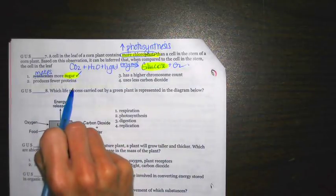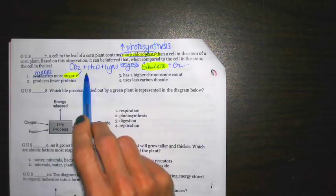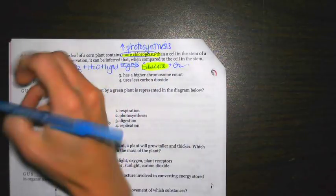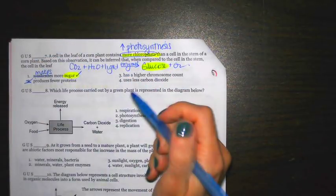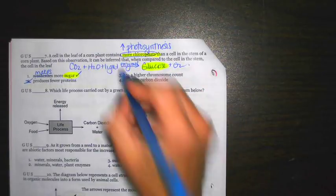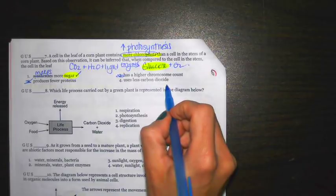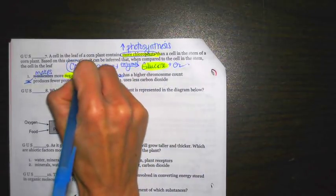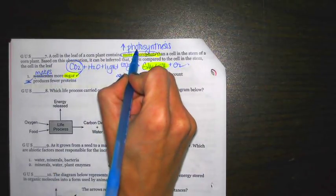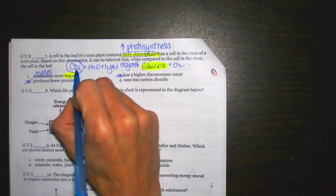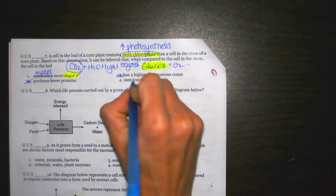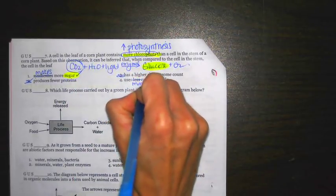It says, produces fewer proteins. There's no proteins in this formula. Number three says, has a higher chromosome count. You can't tell that from if there's more chloroplasts. And then uses less carbon dioxide. Carbon dioxide is on this side. If more photosynthesis is occurring, more carbon dioxide is going to be used by those cells. So not less. It'd actually be more. Best answer choice there is one.